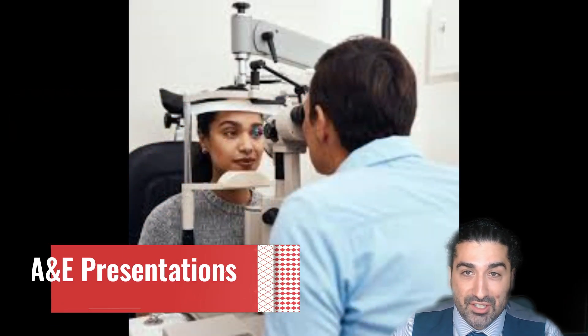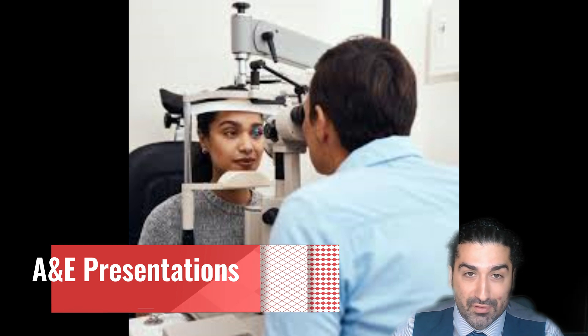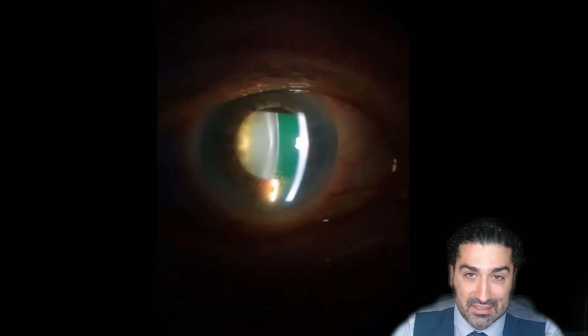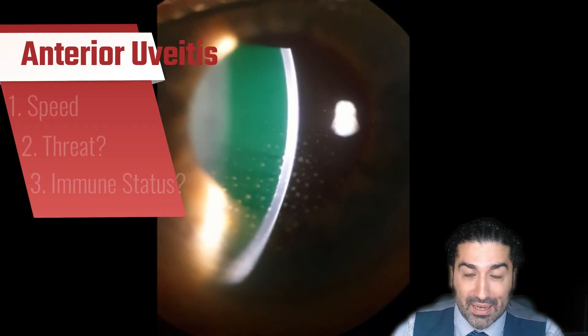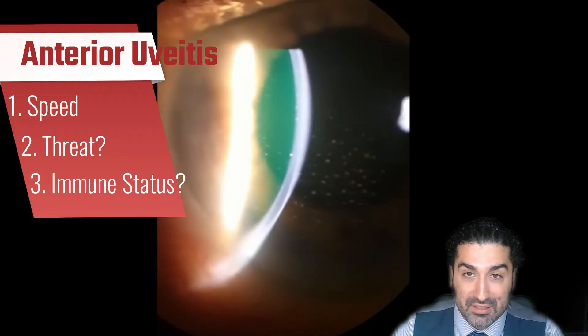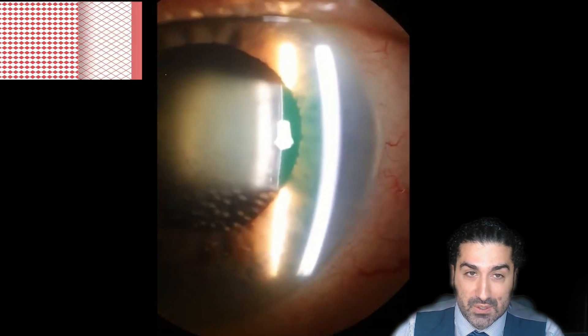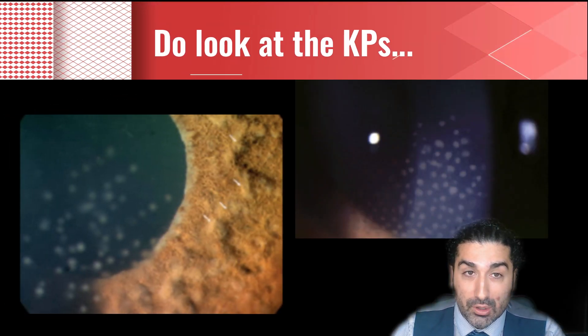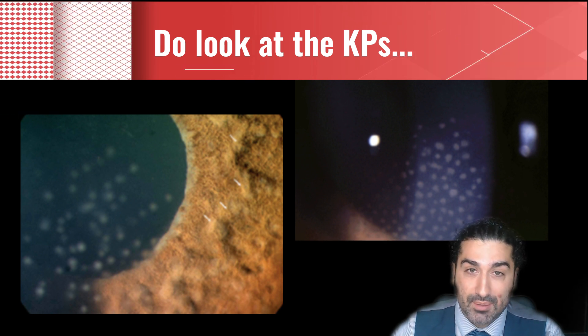Looking at common A&E presentations: the person who comes in with their umpteenth flare of inflammation — a painful red eye, very light sensitive — you see cells, you see keratic precipitates, and it's very important to look in the back of the eye in the first instance to rule out a viral retinitis. The threat is usually minor unless the pressure is high. Do look at the KPs — keratic precipitates — to see whether they're fat ones in the endothelium, which might suggest sarcoid or TB, and sometimes viral, so it's important to look in the back.